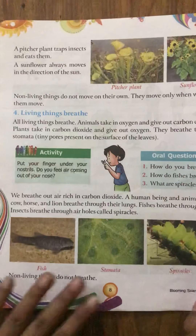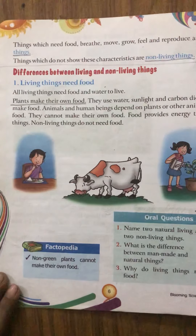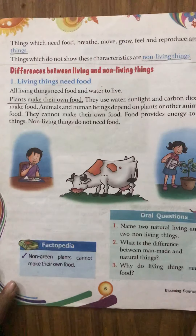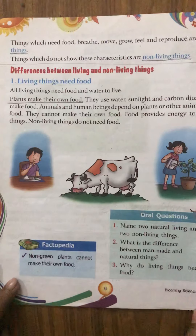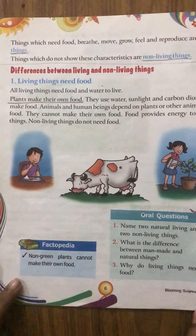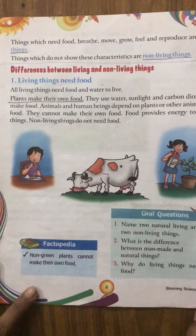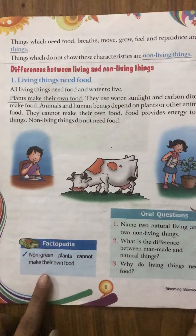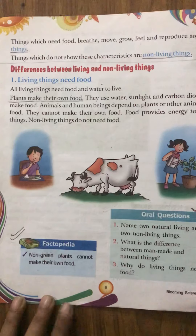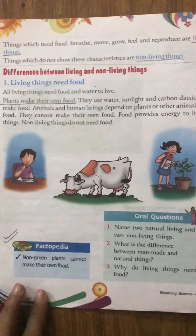In this video we covered only three important points. Let me revise: living things need food, whereas non-living things do not need food. Living things grow, whereas non-living things do not grow. Living things move, but non-living things do not move on their own. Factopedia: non-green plants cannot make their own food.